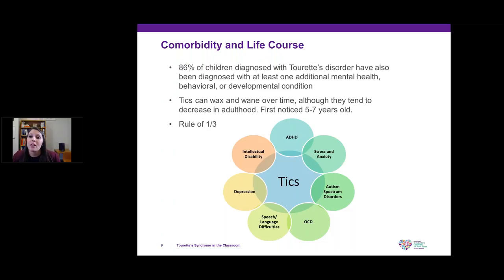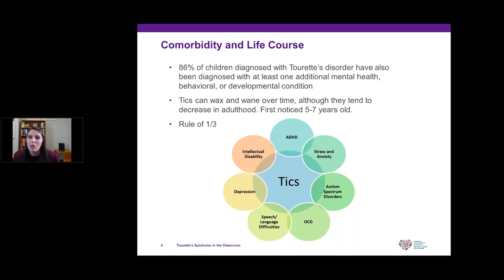Tics are first noticed at ages five to seven, and it may take longer for diagnosis, but they tend to wax and wane throughout childhood and adolescence, sometimes decreasing in adulthood. In terms of life course, we think about the rule of thirds: for a third of kids, tics will probably go away and won't persist into adulthood; for a third, they may decrease in severity but still be present; and for about a third, tics will persist through their lifetime and may even become more severe in adulthood.